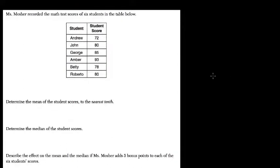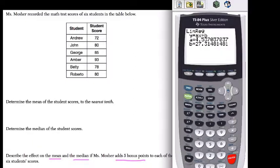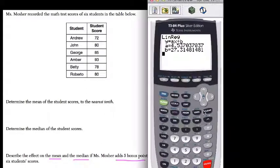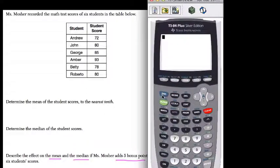Okay, the next question. So we have these student scores, and we want to find the mean and the median and describe the effect of the mean and the median if Mrs. Mosher adds five bonus points to each of the students, six student scores. Okay, so I'm going to actually pull the graph and calculator here just for good practice. You don't need to, but I think it's a good idea. So again, the way this works is that you want to enter this data into a list.